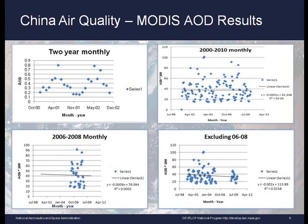On this slide, you can see four different plots of MODIS AOD values for the city of Beijing. In the top left graphic, two years of monthly MODIS AOD values have been plotted to demonstrate the seasonal variation, showing the rise of AOD values during warmer months and the fall in cooler months. In the top right graphic, monthly AOD data has been plotted for all months from the year 2000 through April 2010. In the lower left graphic, the 2006 to 2008 time period has been separated, showing a trend line encompassing the 2008 Beijing Olympics. In the lower right, all data except for 2006 to 2008 is depicted.